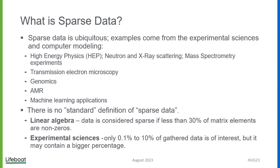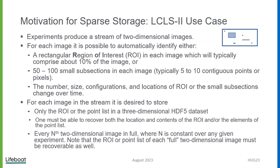This was demanded many years ago. Our first real dive into a sparse use case was at least seven years ago. Mass spectrometry is a good example of experiments where data is sparse, and so on, including MRI and machine learning applications. There is no standard definition. In linear algebra, data is considered sparse if less than 30% of matrix elements are non-zeros. In experimental sciences, usually 0.1% to 10% of gathered data is of interest, but it may contain a bigger percentage as we will see.